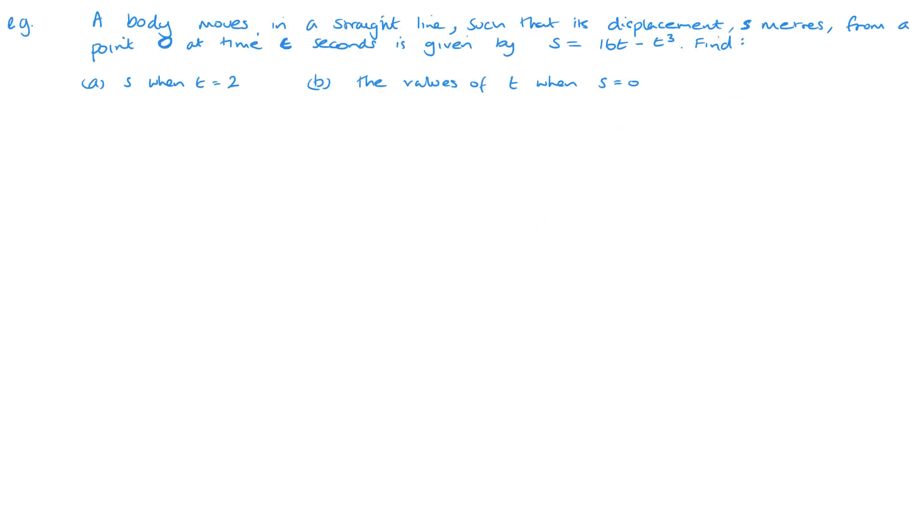So nice, easy one here. A body moves in a straight line such that its displacement s meters from a point O at time t is given by s equals 16t minus t cubed. So just thinking about, remember, displacement is a vector distance. So it's about the distance essentially between a point and the origin in this case. It won't be the total distance traveled, it'll just be between that start point and whichever endpoint you're looking at. So it's just worth bearing that in mind. Remember, displacement is a vector distance essentially, rather than like an overall distance.